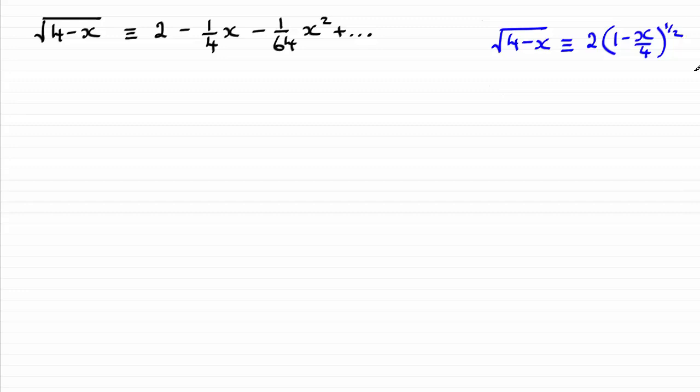Just to remind you, we've expressed the root of 4 minus x in the earlier part of the question as two times the bracket 1 minus x over 4, all to the power half.